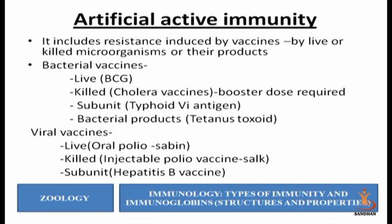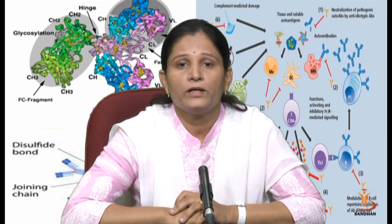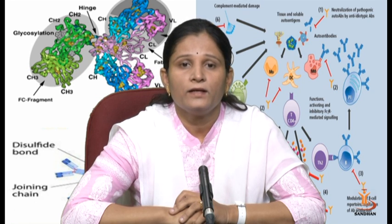BCG is an example of a live vaccine. For killed vaccines, we use them for cholera; however, in case of killed vaccines, a booster dose is required. A booster dose is the repetition of the vaccine after a certain time period — it boosts the memory of immune cells and shows a good response against viruses. There can also be a subunit vaccine; for example, for typhoid we use a subunit vaccine. Certain bacterial products are also used as vaccines, for example tetanus toxin.